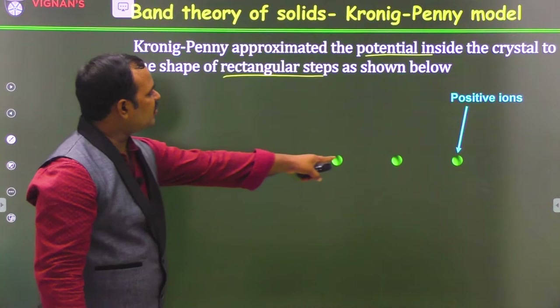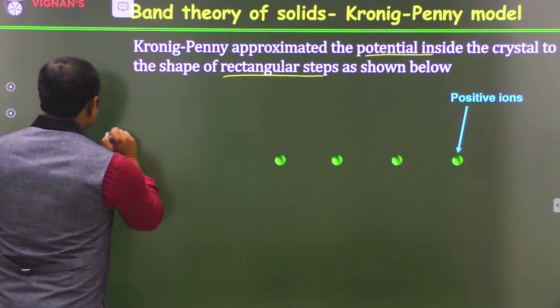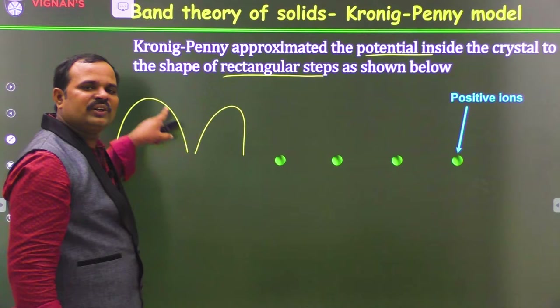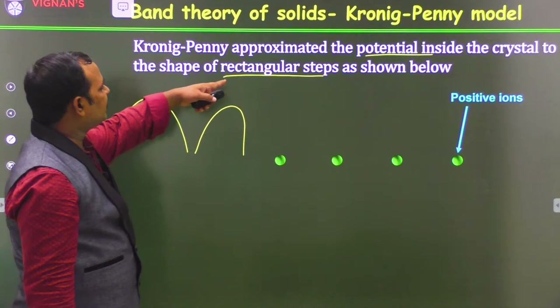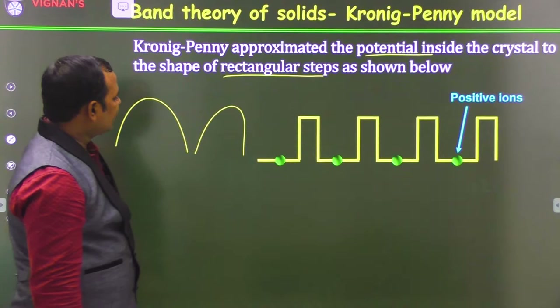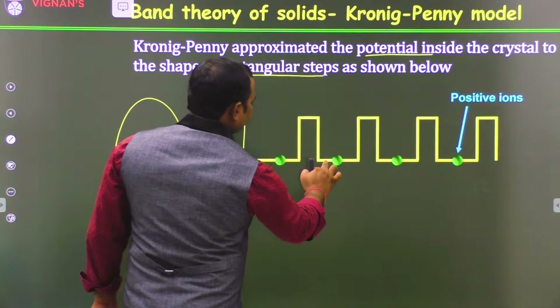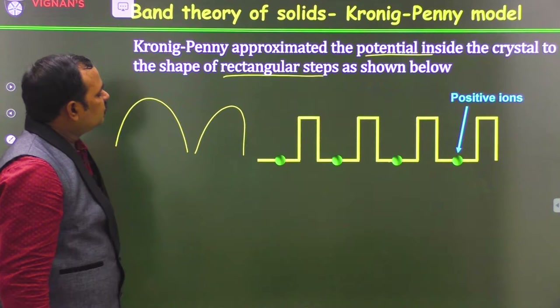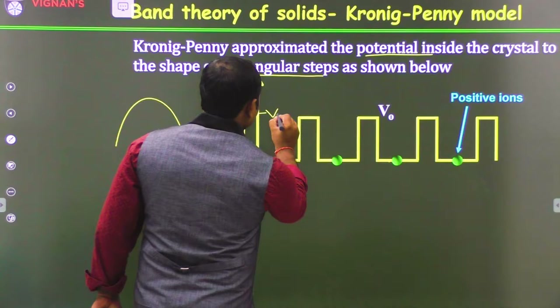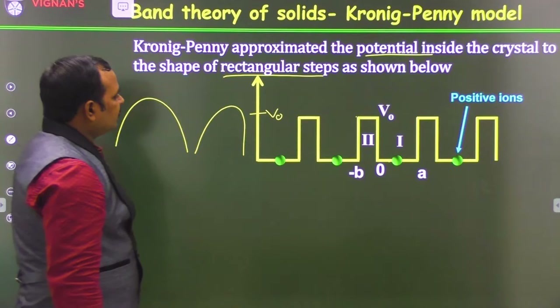As you can see in the picture, these are all positive metal ions. The potential is varying, but it is very difficult to calculate when the potential varies this way. Instead, Kronig-Penney approximated this potential into rectangular steps. These are all rectangular steps — going from maximum to minimum, maximum to minimum. The height of the potential is V₀.